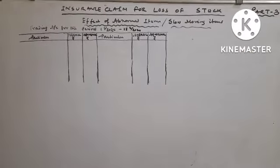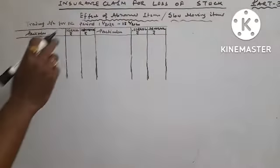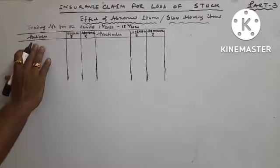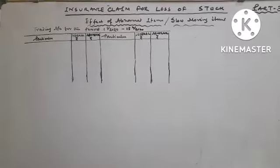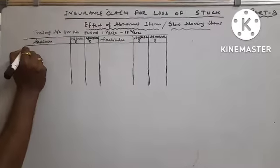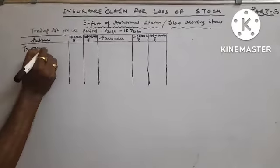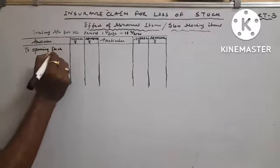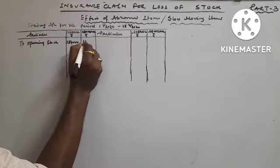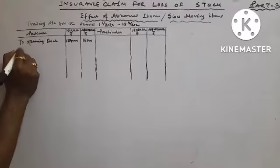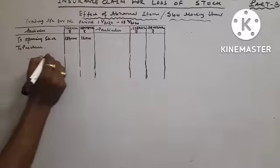Now we have to prepare trading account for the period 1-1-2020 to 15-4-2020. Particular normal rupees, abnormal rupees. To opening stock, 1,54,000, abnormal is 16,000. To purchase, 3,40,000.